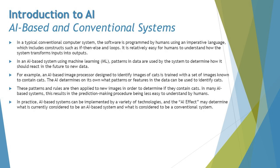First, we are comparing AI-based systems and conventional systems. In a typical conventional computer system — our ordinary software used in day-to-day life — the software is programmed by humans using an imperative language, which includes constructs such as if-then-else and various other loops. It is relatively easy for humans to understand how the system transforms inputs into the desired outputs. We are referring to languages like Java, Python, and .NET used to implement conventional applications.